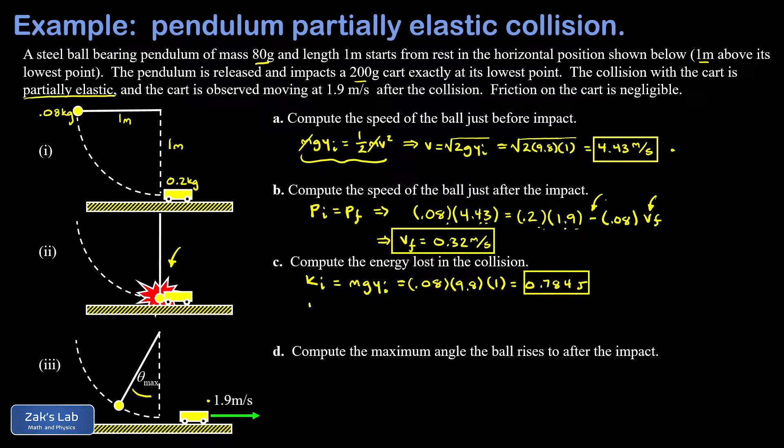Now in the final state, I have to account for the kinetic energy in both moving objects. So I have the pendulum bob moving to the left and I have its speed. I'm going to do one half MV squared: one half times 0.08 times the pendulum bob's speed just after the impact, 0.32 meters per second, all squared. Then I have the cart, which has a mass of 0.2 kilograms and a speed of 1.9 meters per second. So I do one half MV squared for the cart. We smash the numbers in a calculator and we get 0.365 joules.